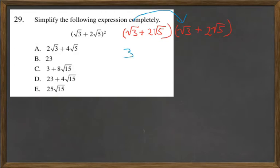And then square root of 3 times 2 square root of 5. Well 2 times 1, there's a 1 outside of the square root of 3. Well that equals 2. And then square root of 3 times square root of 5 is square root of 15. So 2 square root of 15.